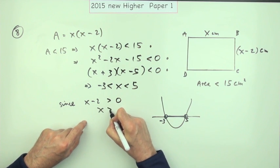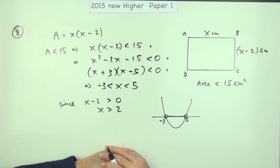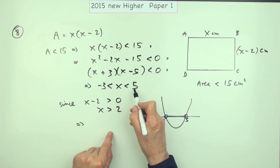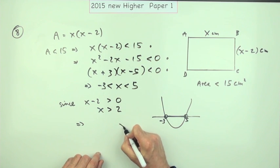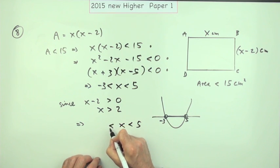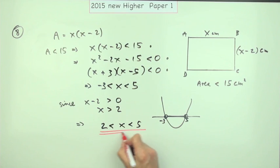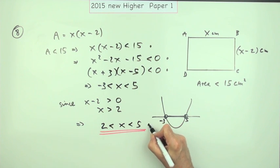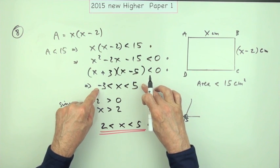So finally, that means that combining these two together, you've got x can be less than 5, but it must be greater than 2. And that's the fourth mark, not stopping at this and not considering the consequences of your action.